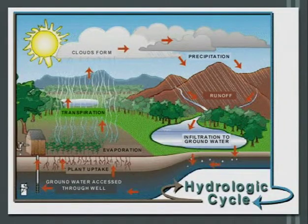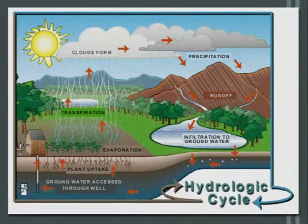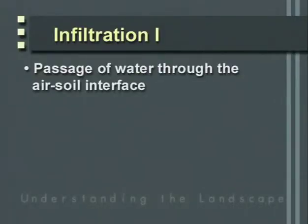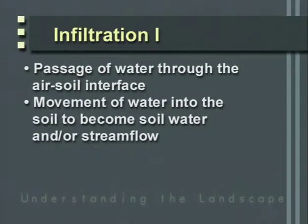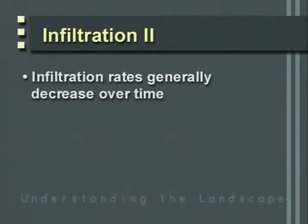Now we need to move precipitation into the soil. This process of water moving through the air-soil interface is called infiltration, also measured as a rate in millimeters or inches per hour. Infiltration rates generally decrease over time: as soil moisture increases, soil colloids and organic material tend to hydrate or expand, decreasing the pore size, which decreases the rate of water moving in. Soil texture, soil organic material, and the amount of litter on the soil all affect infiltration.